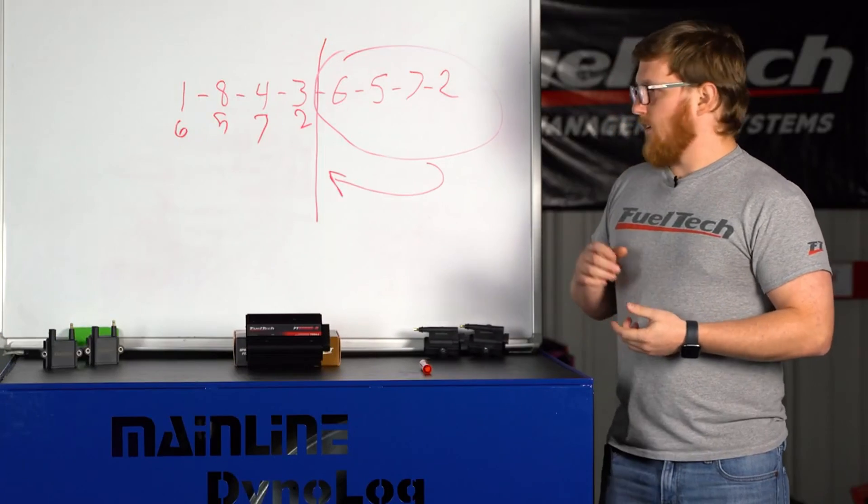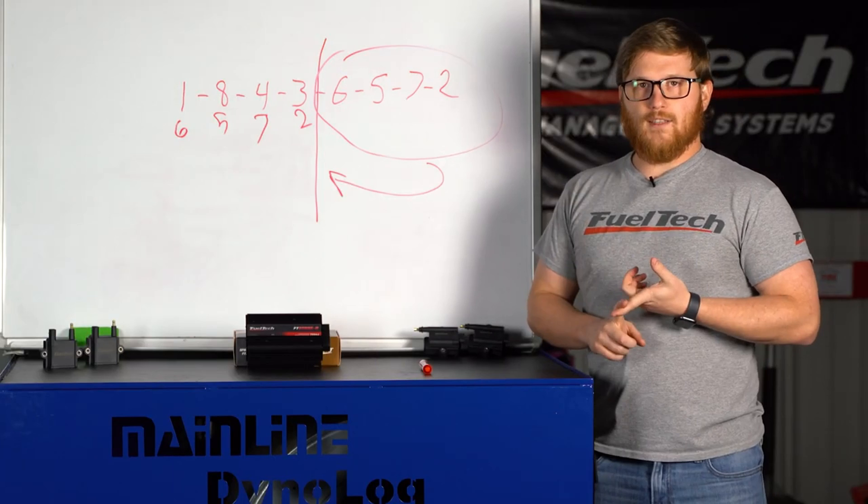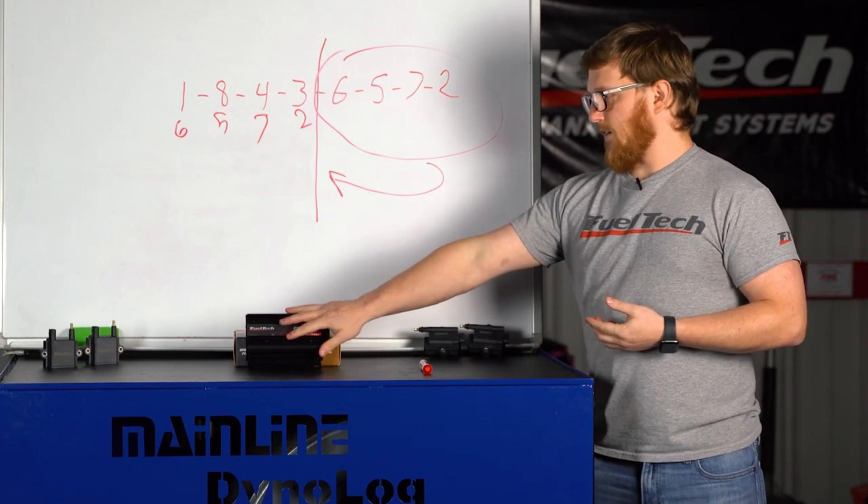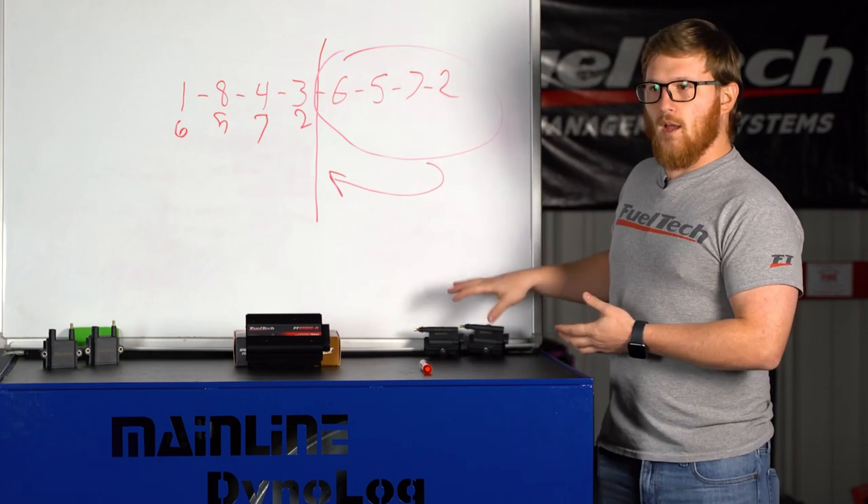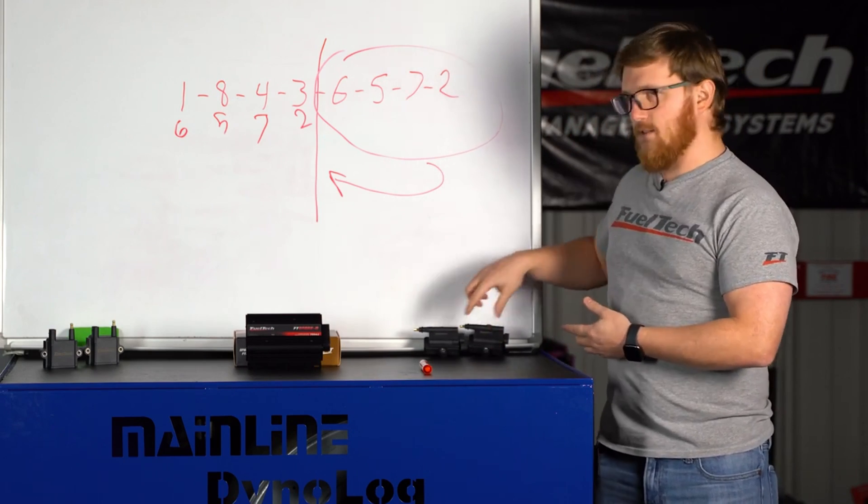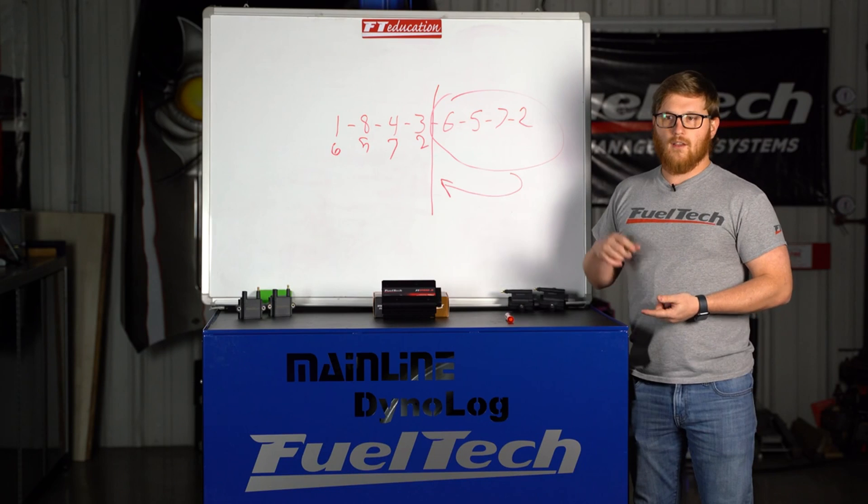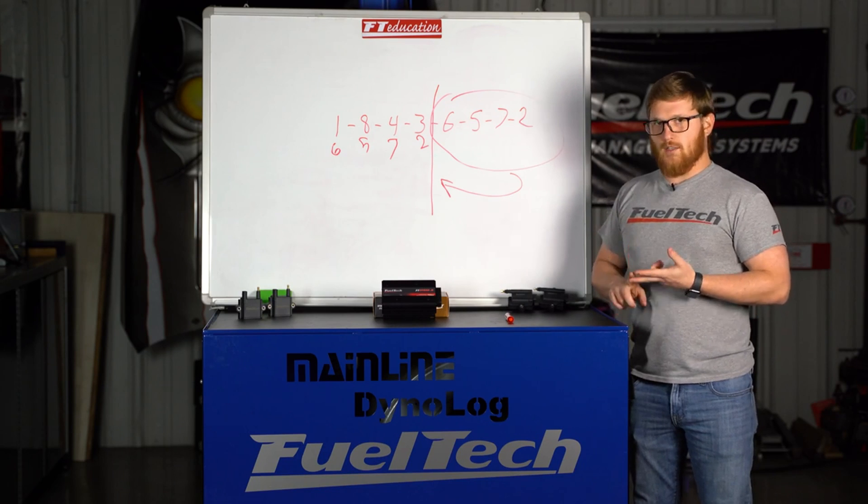So that's what I have for you guys. Now we've gone over what a distributor is, how it works, what a CDI ignition system is and how it works. And generally they're done sequentially and then coil on plug with an inductive coil like these, which you can usually do as wasted spark or in sequential.